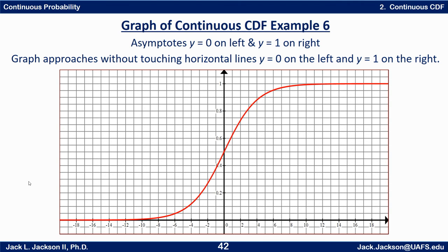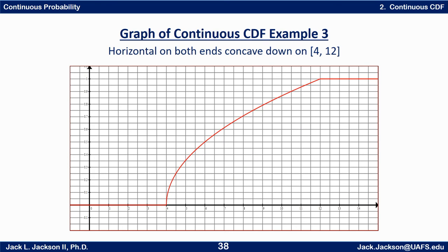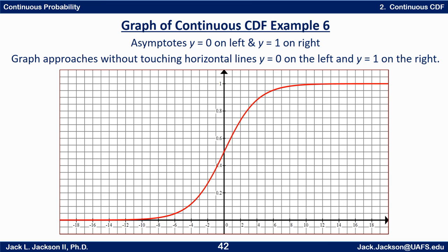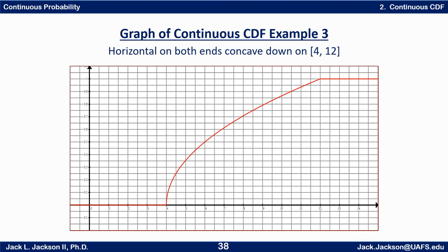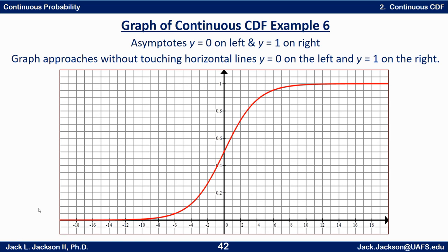So those are several examples of CDFs showing different possibilities, but notice what properties they all have in common: they all essentially start at 0 and end at 1 — either asymptotically or by actually equaling those values — and in between they increase. Come back for the next video and we'll see how we can use a graph like this to compute probabilities.